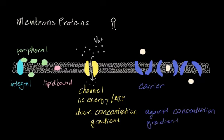This is really important because, say your cell already has a lot of chloride ions but your body needs more to perform a certain process — carrier proteins can bring more chloride ions into your cell even though there's already a lot. Carrier proteins can sometimes use energy, or ATP, to accomplish this.